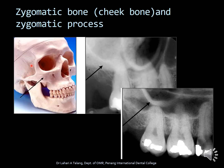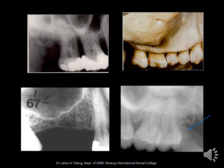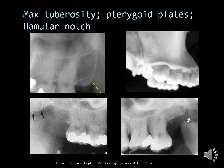The zygomatic bone is the cheek bone, visible as a radiopaque shadow on posterior maxillary radiographs, along with the U-shaped shadow which is the zygomatic process. Additional images further demonstrate the zygomatic process, the floor of the maxillary sinus dipping quite low in an edentulous area. The maxillary tuberosity is the end of the maxilla, indicated by the yellow arrow mark. The pterygoid plates are indicated by the black and white arrow marks, along with the notch-like area called the hamular notch.